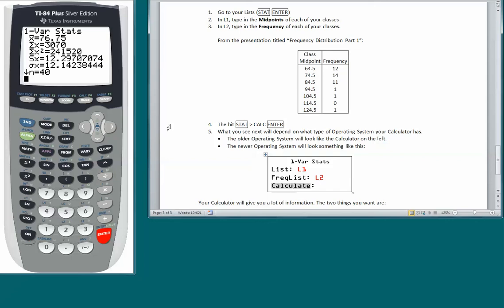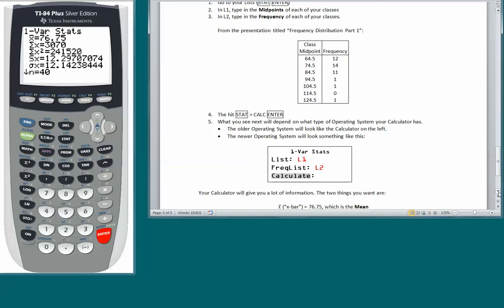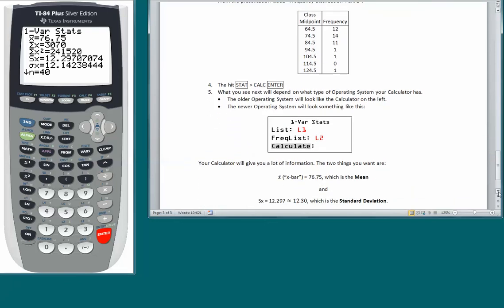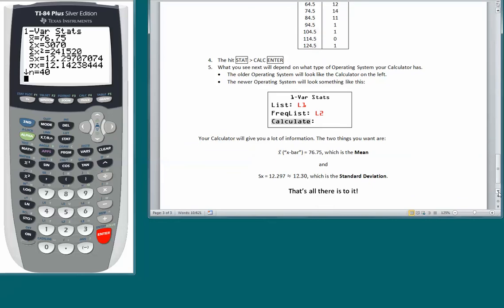When you do that, you will get the same things we see over here. So now we are back together again. We're all seeing the same thing in our calculator. Remember, we are trying to calculate the mean and the standard deviation of this frequency distribution. The mean is this right here, x-bar. So there you see the x-bar is 76.75. That is the mean.